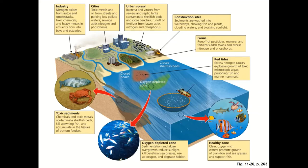Looking at sources of pollution: industry is a big one. Nitrous oxides from automobiles, smokestacks, toxic chemicals, and heavy metals flow into bays and estuaries and end up in the oceans. Cities have toxic chemicals and oil from streets and parking lots polluting waters; sewage adds nitrogen and phosphorus, potentially adding biological pollution. Urban sprawl and suburbs introduce bacteria and viruses from sewer and septic tanks that contaminate shellfish beds and close beaches. Runoff and fertilizer from lawns adds nitrogen and phosphorus. Construction sites have sediments that get washed away into waterways, clouding the water — turbidity blocks out sunlight and decreases plant growth.